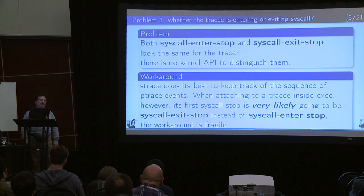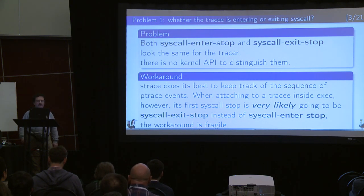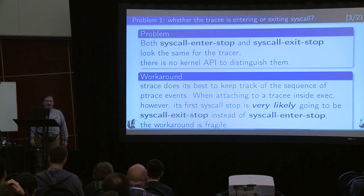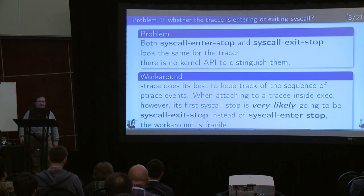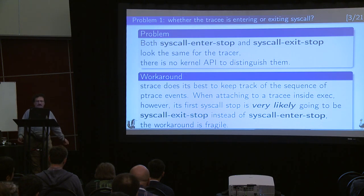The first problem is one that was always there. When you use the ptrace interface, for every system call there is a so-called syscall enter-stop and syscall exit-stop. But for the tracer, they look absolutely the same. There is no way in the kernel API to distinguish them - no way at all. So what debuggers do, or what strace does, is they just try to keep track of the sequence of events. They assume that when they attach, the first syscall-stop is an enter-stop, and then they always keep this sequence: enter-stop, exit-stop.